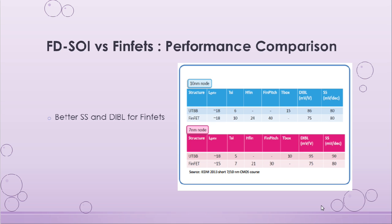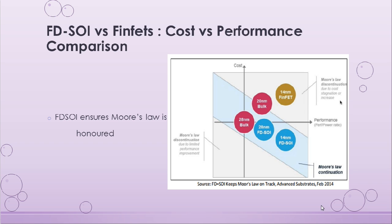Let us compare the various performance metrics of FDSOI devices versus FinFETs. This chart was published in EETM 2013, and looking at the last two columns — for both the 10nm node and the 7nm node — we can find that the DIBL and subthreshold slope characteristics of FinFETs are much better than those of FDSOI devices. Looking at the cost versus performance comparison, the FDSOI devices, keeping on track with Moore's law, offer better performance at decreasing per unit cost, whereas bulk and FinFET devices offer better performance at the expense of increasing per unit cost. Hence, FDSOI devices ensure that Moore's law is honored.